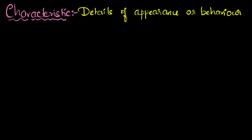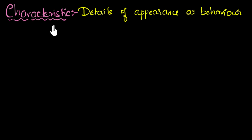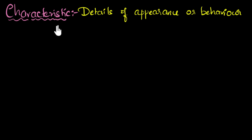You can think of any details of behavior, and that becomes a characteristic. Characteristic is a very general term. And if two species share a lot of common characteristics, we will say they are very closely related.